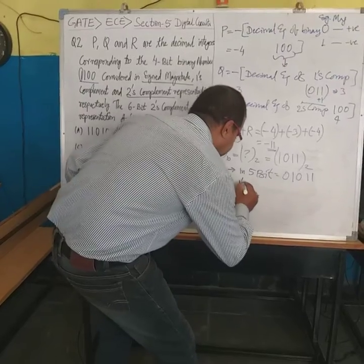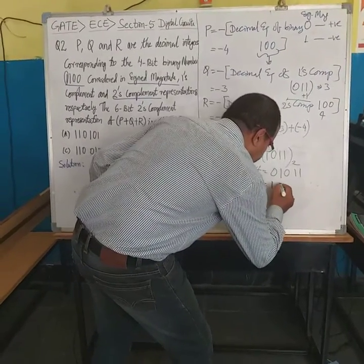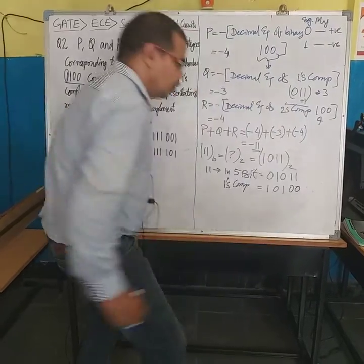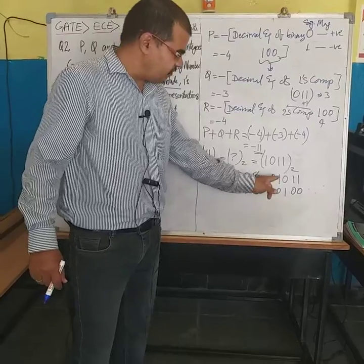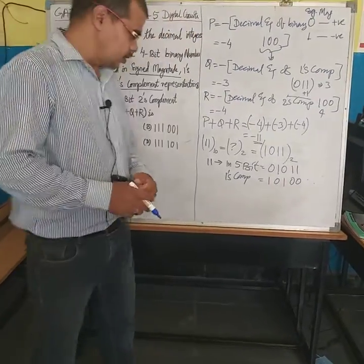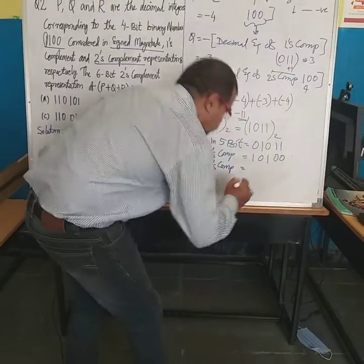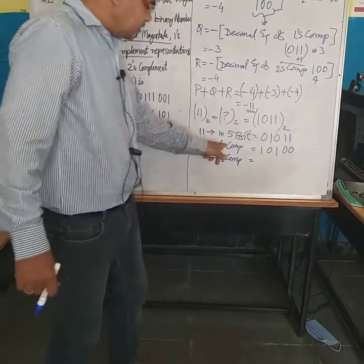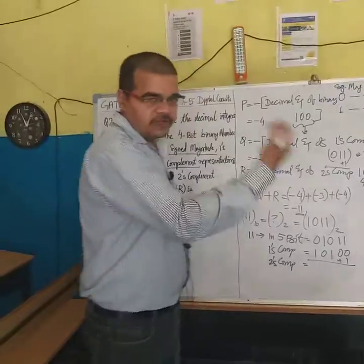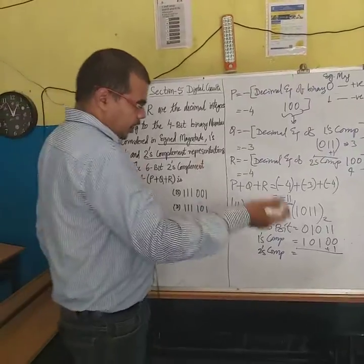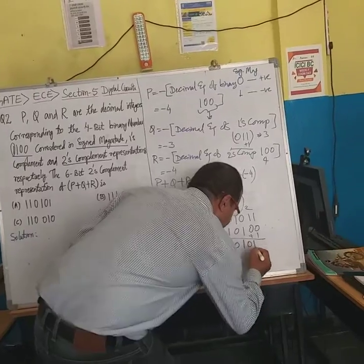Finding the 1's complement of 01011: wherever we have 0, replace with 1, and wherever we have 1, replace with 0, giving 10100. Then for the 2's complement, we add 1 to get 10101. This is the 5-bit magnitude portion.